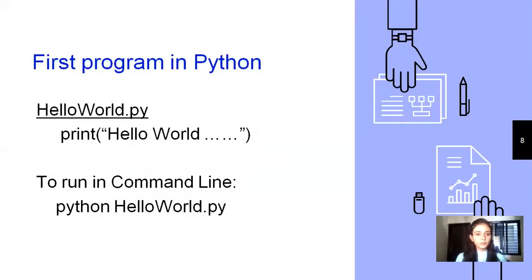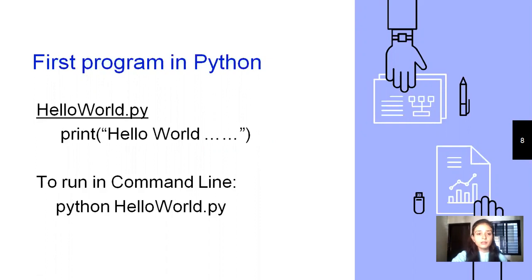In every programming language, the very first program that we study is the Hello World program. So here also in Python, we will be studying the very first program of Hello World. This is my file name, that is HelloWorld.py — .py is the extension of the file. You all know that when you are programming in C and saving that C file, the extension was .c.